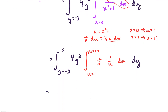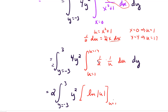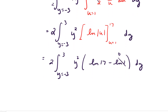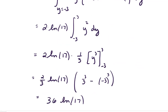So we have 2 times the integral from negative 3 to 3 of y² dy, times the integral of 1/u — which gives natural log of |u| — evaluated from u equals 1 to 17. Evaluating: ln(17) minus ln(1), which is 0, so we get ln(17), just a constant. We pull that out front: 2 ln(17) times the integral from negative 3 to 3 of y² dy. The final answer works out to be 36 ln(17).